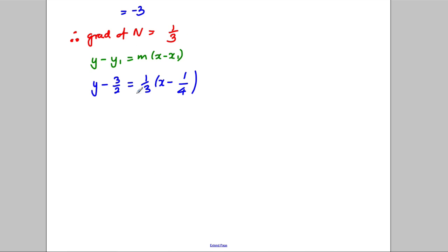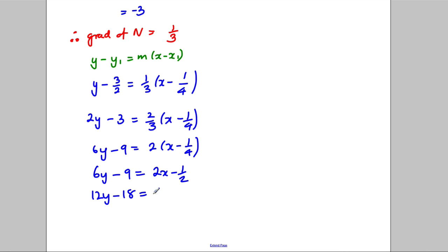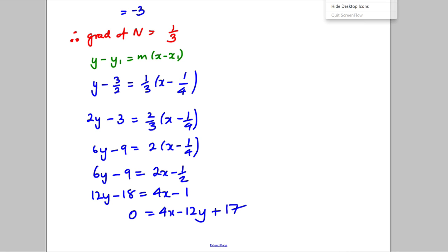If you wanted to tidy up, multiply everything by 2 to get 2y subtract 3 equals two-thirds times x subtract a quarter, then multiply by 3 to get 6y subtract 9 equals 2x subtract a quarter. Multiplying out gives 6y subtract 9 equals 2x subtract a half, and multiplying by 2 gives 12y subtract 18 equals 4x subtract 1, or 0 equals 4x subtract 12y add 17. But there's no need — it was fine to leave it earlier.